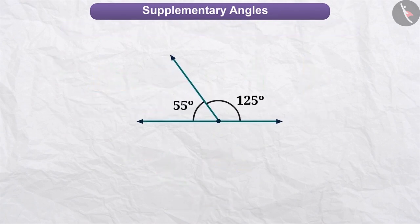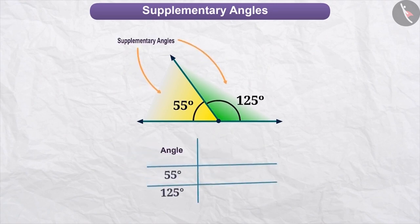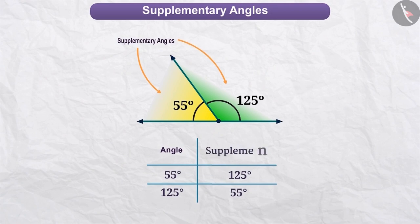If two angles such as 55 degrees and 125 degrees are supplementary, then each angle is called a supplement of the other. For instance, angle 55 degrees is the supplement of angle 125 degrees, or we can also say that angle 125 degrees is the supplement of angle 55 degrees.